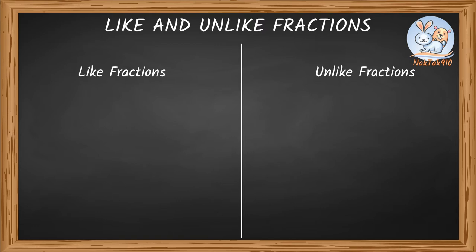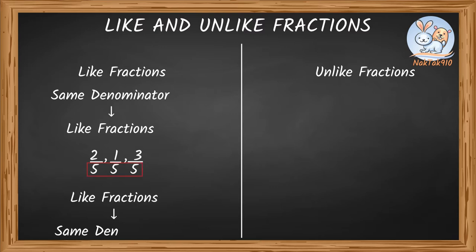What are like fractions? If two or more fractions have the same denominator, then they're called like fractions. You mean, bottom numbers are same, right? Yep. For example, 2 by 5, 1 by 5, 3 by 5 are all like fractions, because they have the same denominators. They all have the same bottom number.